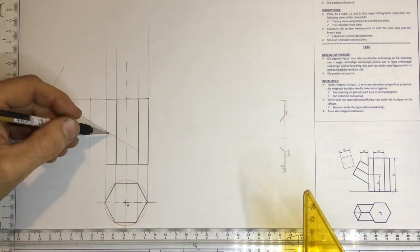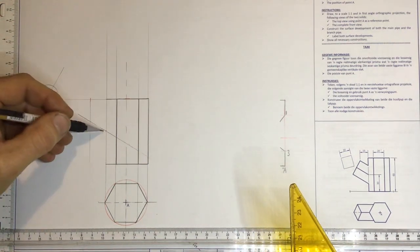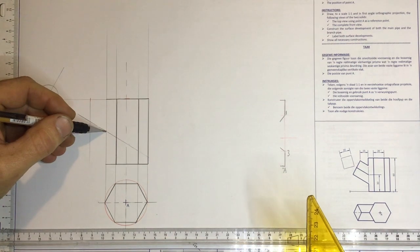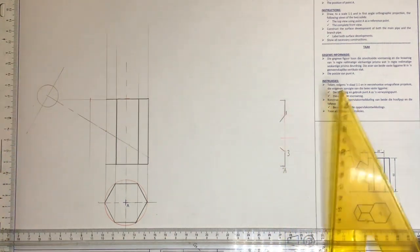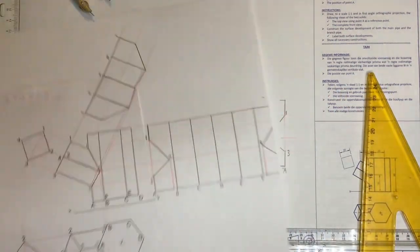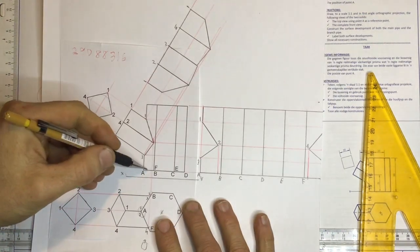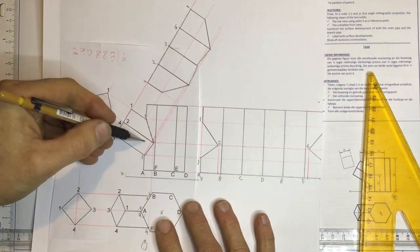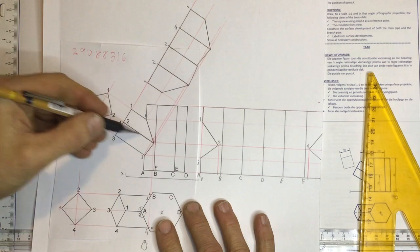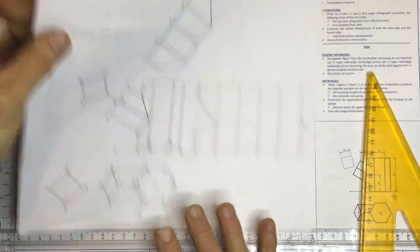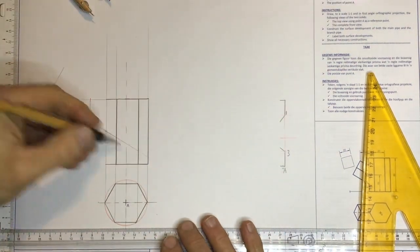In order to draw that branch pipe, they've given you a measurement of 30 millimeters going up there to where that center line goes through. Let me just show that to you. So 30 millimeters going up to a point over there where that line is intersecting. I've got that in.